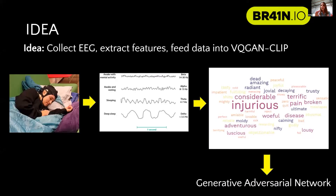The more detailed idea of what we wanted to do is collect EEG data on sleeping participants, extract features from that EEG data, normalize that, and feed those features into our VQGAN model. And then in the end, get artworks out of that model.